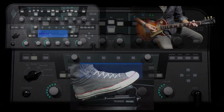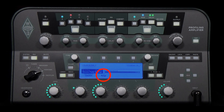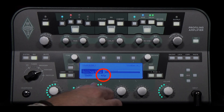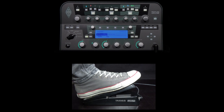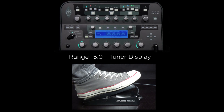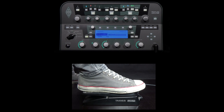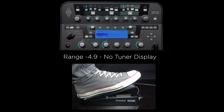The range parameter sets the range of the volume pedal. If you set it to minus 5, the tuner will automatically be shown in the display when the pedal is in the heel position. The tuner display does not appear if you set the range to minus 4.9. Even at this setting, no signal can be heard when the pedal is in the heel position.